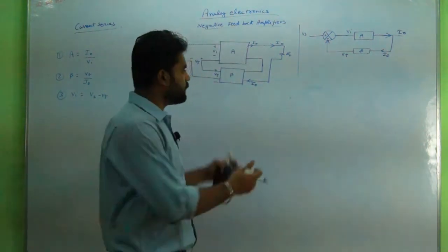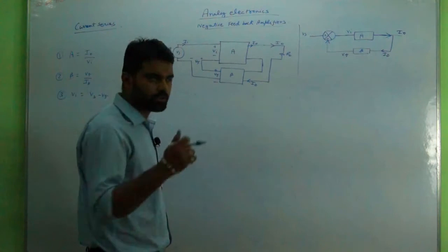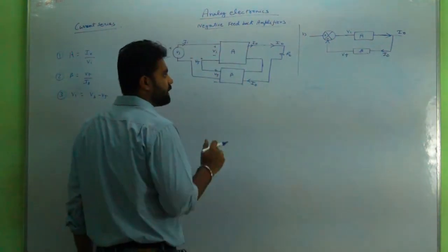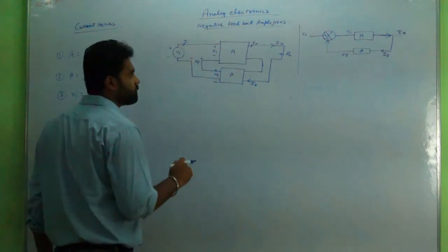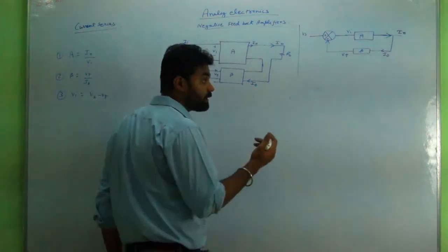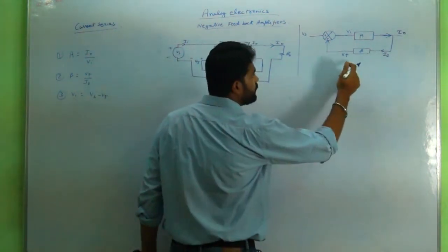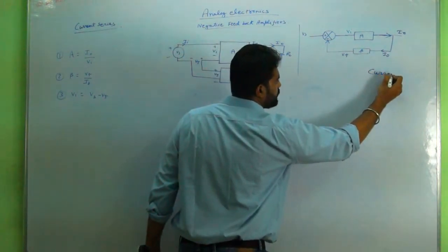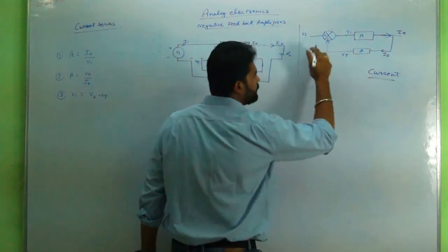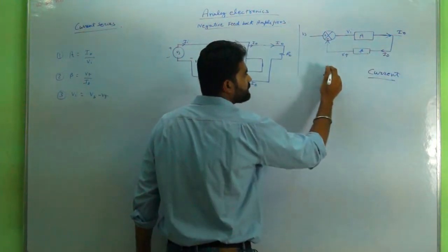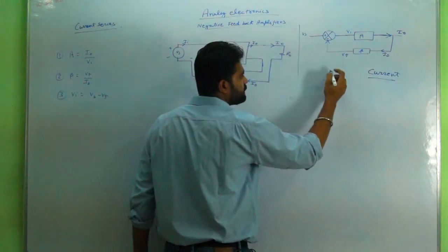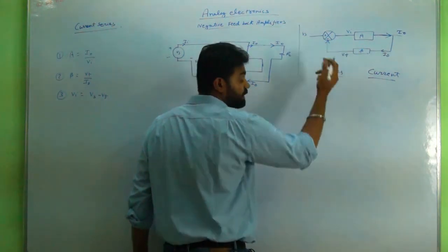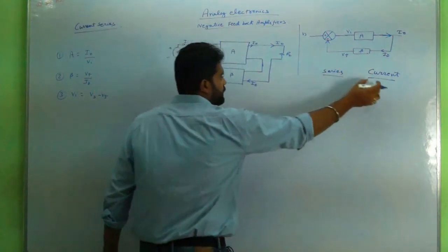In current series, this is the diagram I have already drawn. Current series — I will clarify the name: 'current' means output current is being fed back, and 'series' means the input voltage is series mixing, so voltages are added or subtracted. That is why it is called current series.